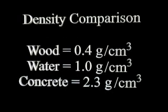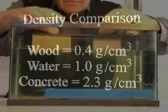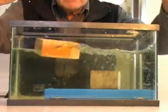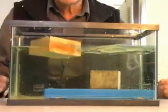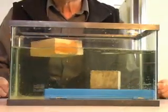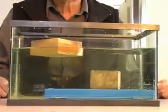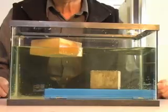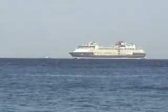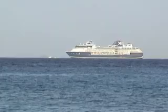Getting back to our investigation of density and buoyant force, this table shows the wood is less dense than water, and that the concrete is more dense than water. The wood block floated while the concrete sank. A conclusion from this data is that objects denser than water will sink, while objects less dense than water will float. This is true for other fluids, not just water.